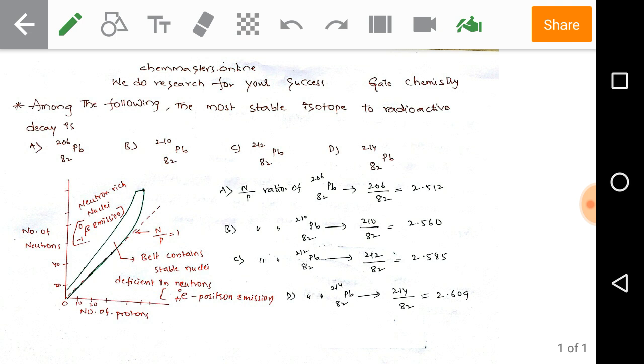If you observe the graph, we have the number of neutrons on the y-axis and number of protons on the x-axis. In between them is the belt. The nuclei present in this belt are very stable.